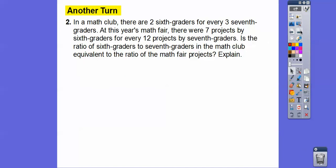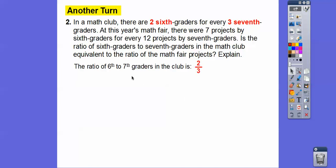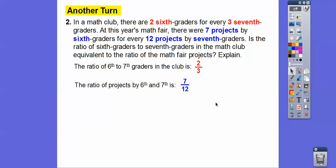In a math club, there are two sixth graders for every three seventh graders. At this year's math fair, there were seven projects by sixth graders and twelve projects by seventh graders. Is the ratio of sixth graders to seventh graders in the club equivalent to the ratio of their projects? The club ratio is two to three; the projects ratio is seven to twelve.